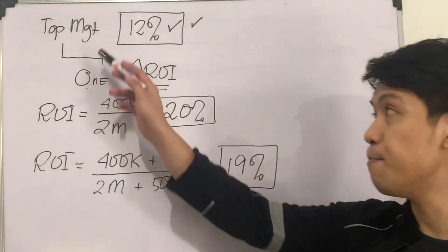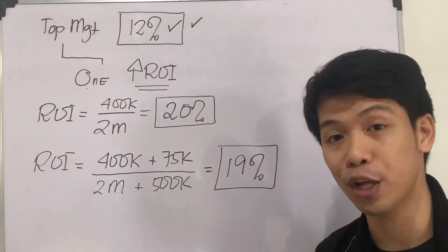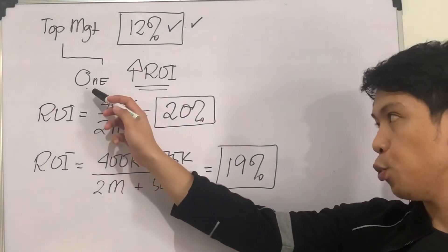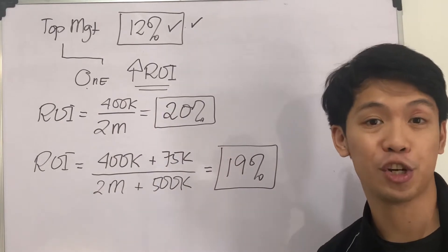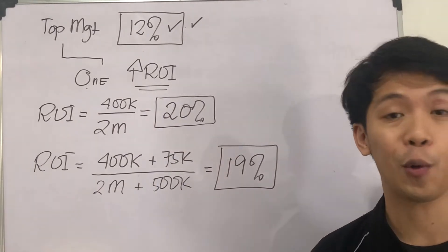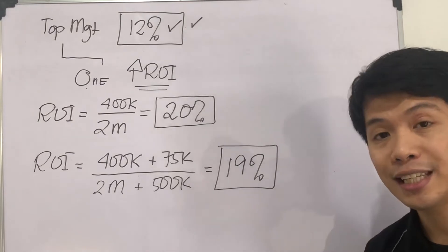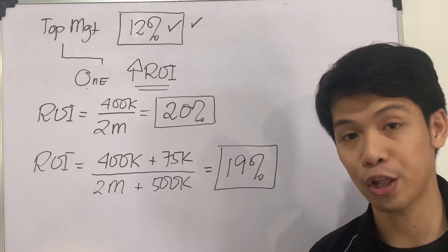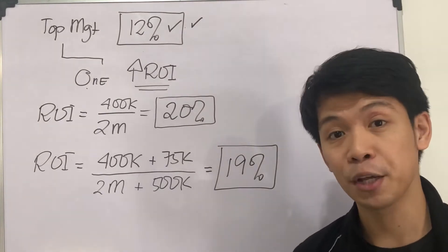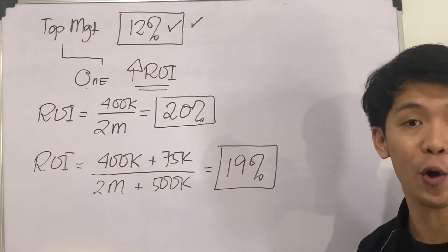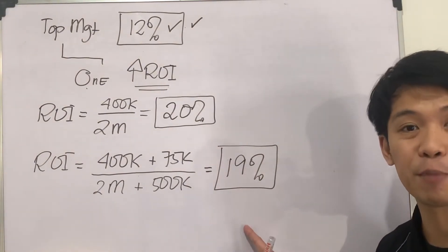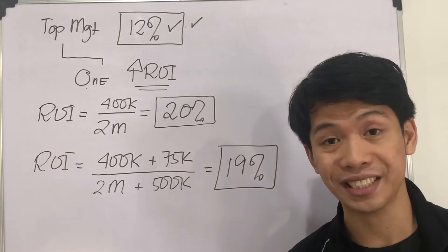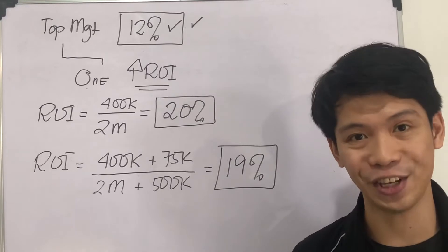In the previous video, we have demonstrated that the ROI will decrease as a result of accepting the project. Remember, top management would want any investment with an ROI higher than 12%. Meanwhile, we, the department manager of One Product, would want to increase our ROI. Since our ROI is already 20%, we no longer want to take the project with an ROI of 15% because doing so will reduce our ROI to 19%. Now, what if the basis of the evaluation this time is residual income rather than ROI?